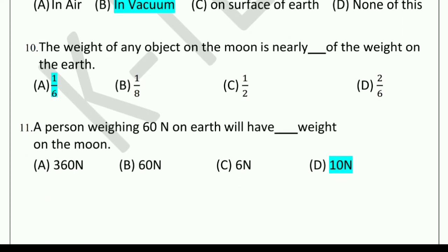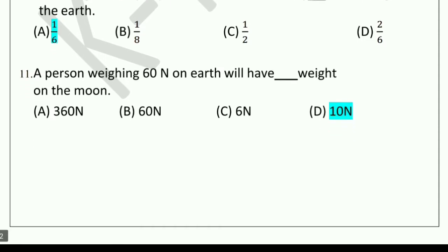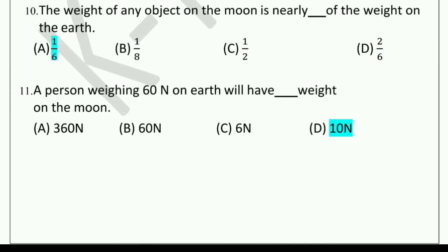Tenth question: The weight of any object on the moon is nearly dash of the weight on the earth. Options: one-sixth, one-eighth, half, or two-sixths. The correct answer is one-sixth. Eleventh question: A person weighing 60 newton on earth will have dash weight on the moon. Options: 360 N, 60 N, 6 N, or 10 N. Answer: 10 newton.